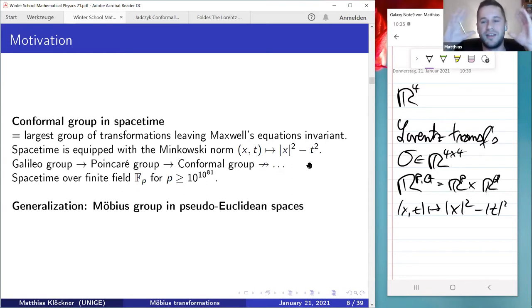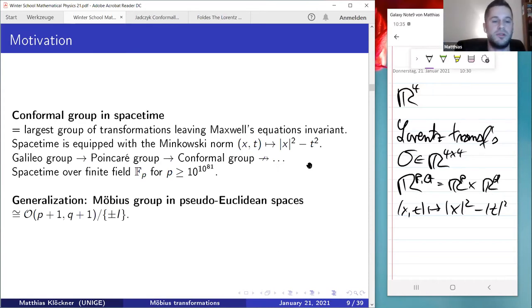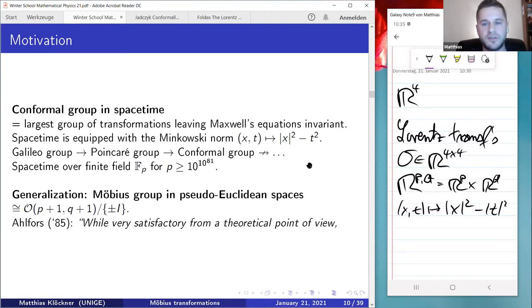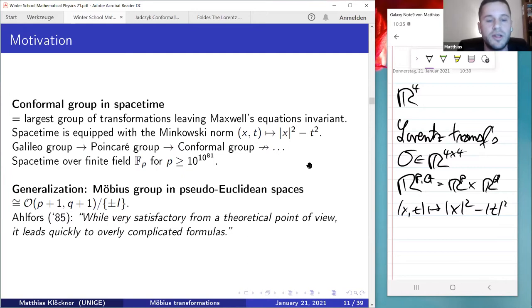One can show—the following result is kind of the main theme of my talk. It's strange because on the one hand, it's very well known. Everyone knows about the fact that this Möbius group is isomorphic to the orthogonal group of pseudo-Euclidean space, where we add one space and one time dimension, and if we quotient out plus minus the identity matrix. This is well known. For example, Lars Ahlfors wrote in '85 that this correspondence of Möbius transformations and matrices, certain orthogonal matrices, is very satisfactory from a theoretical point of view. But it leads quickly to overly complicated formulas. And the goal of this talk is to show that this is not true.